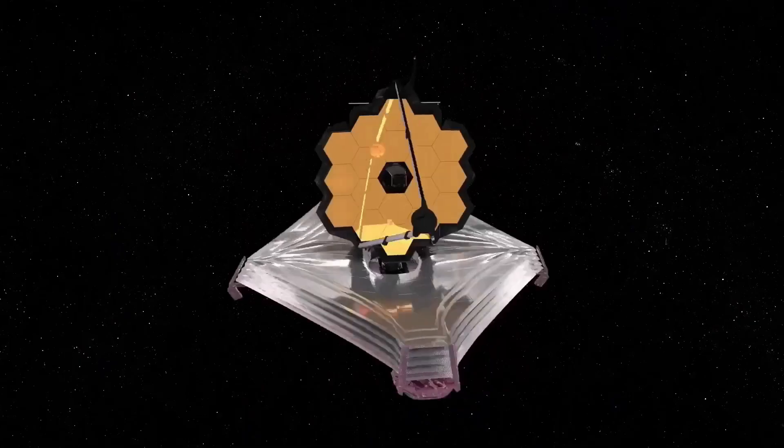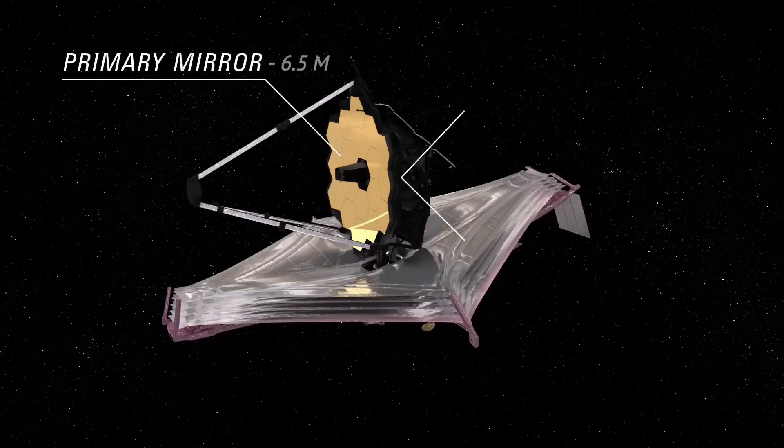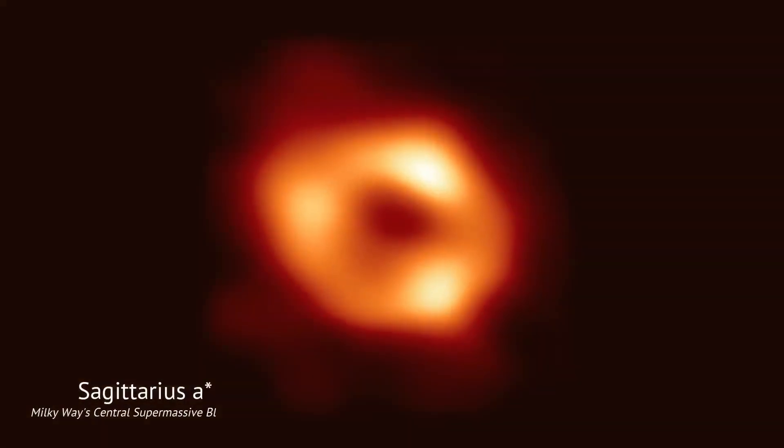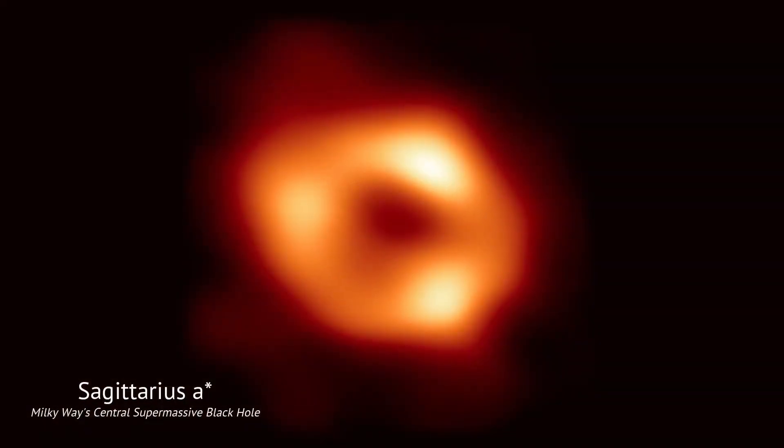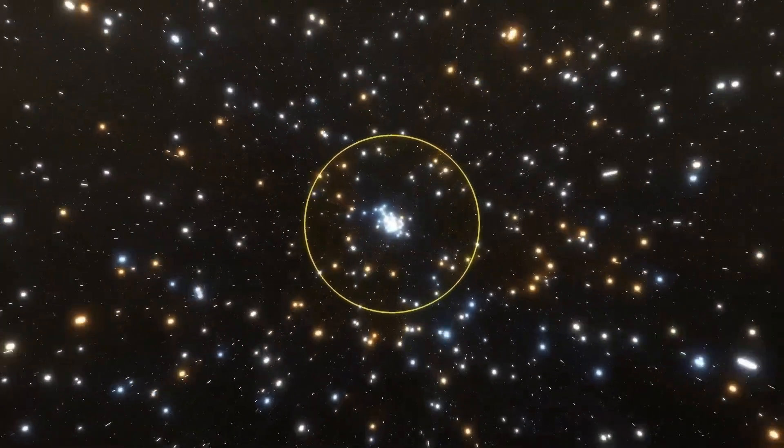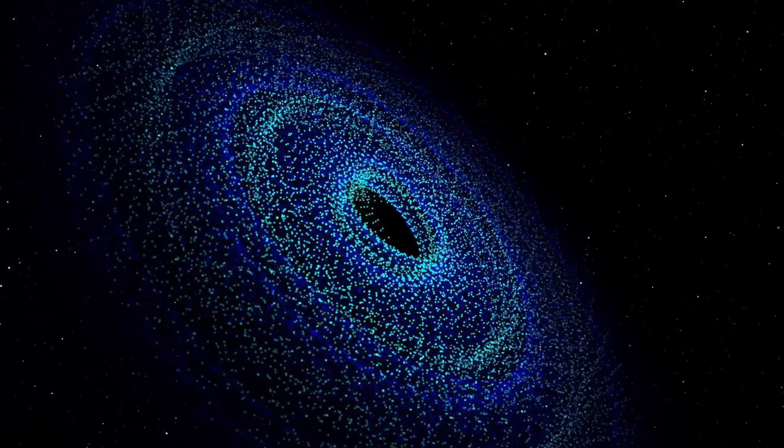Then the James Webb Space Telescope was launched. Armed with a massive 6.5 meter mirror and tuned to infrared, the exact kind of stretched ancient light that early galaxies emit, Webb didn't just continue Hubble's work - it crushed its records.